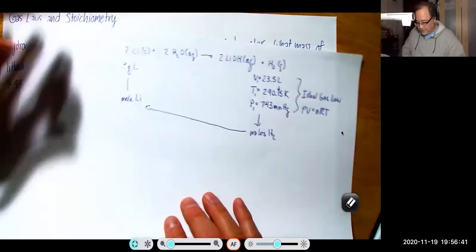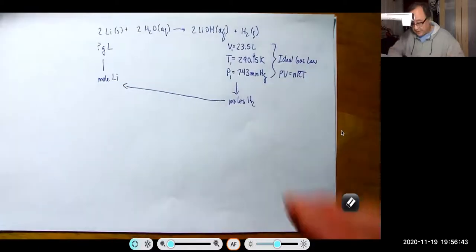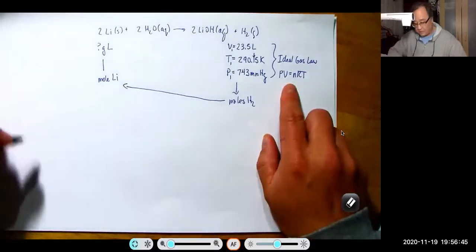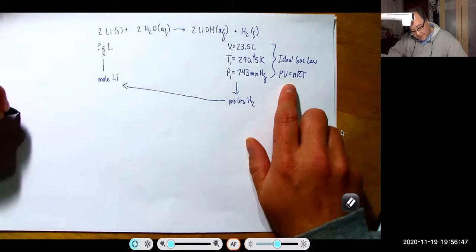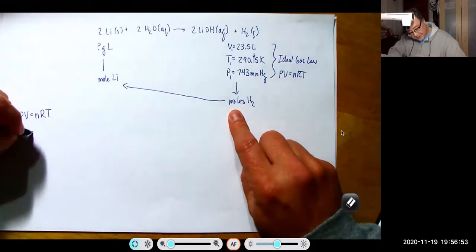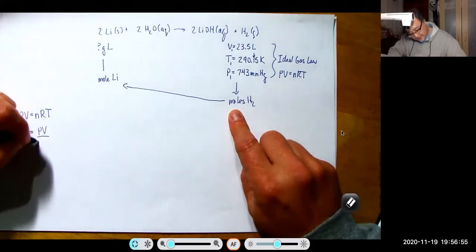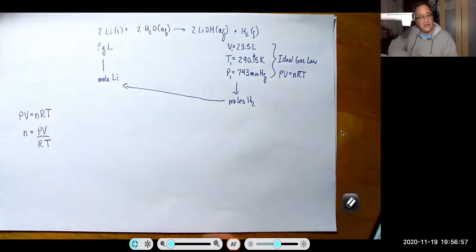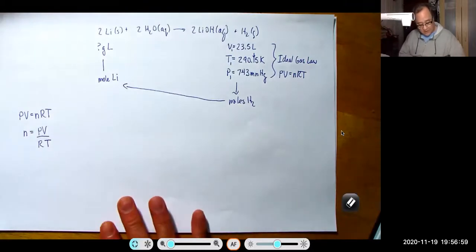So here, it looks like we want to do this in two steps. Let's use the ideal gas law first. So we're going to take PV equals NRT. And since we want the moles of H2, we're going to rearrange this and write it as N equals PV over RT.